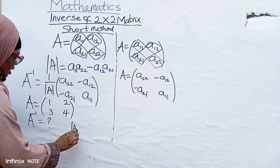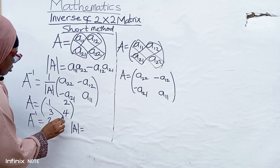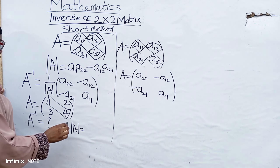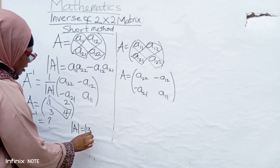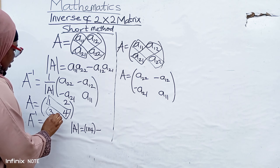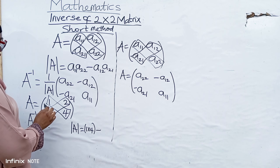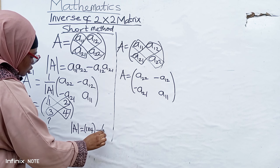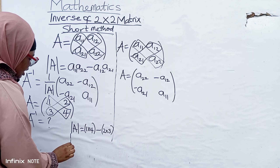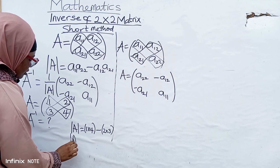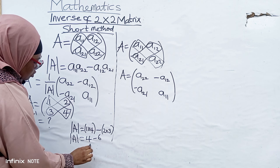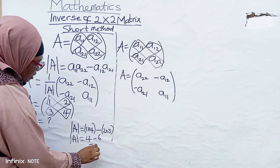The first thing is to find the determinant of A. The determinant is the multiplication of elements in the leading diagonal — 1 multiplied by 4 — minus the multiplication of elements in the second diagonal, which is 2 multiplied by 3. So the determinant of A equals 4 minus 6, which is equal to minus 2.